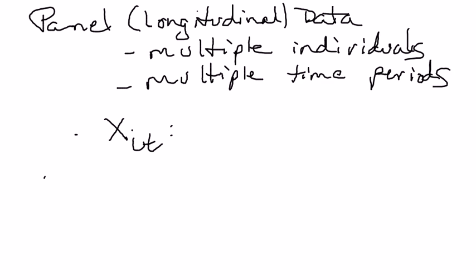So those are the three basic types of data: cross-sectional data, time series data, and panel data — which is really a merge of the two, looking at multiple individuals over multiple time periods. For most of the semester we'll be looking at cross-sectional and time series data, but if we get a chance, we'll go ahead and look at panel data at the end. That's it for the different types and structure of data.